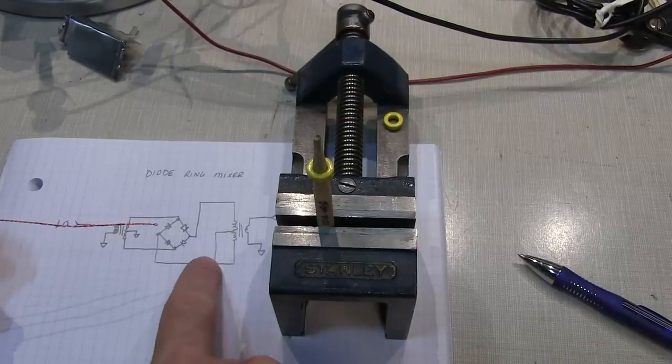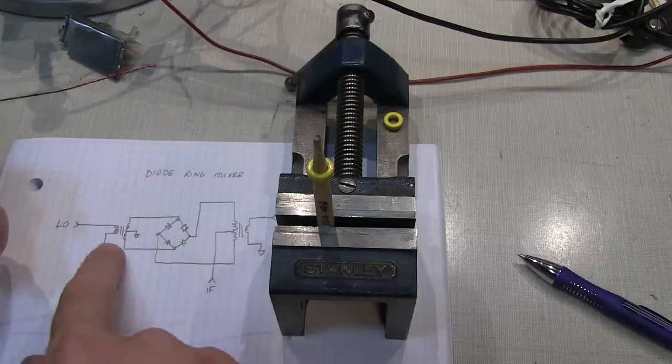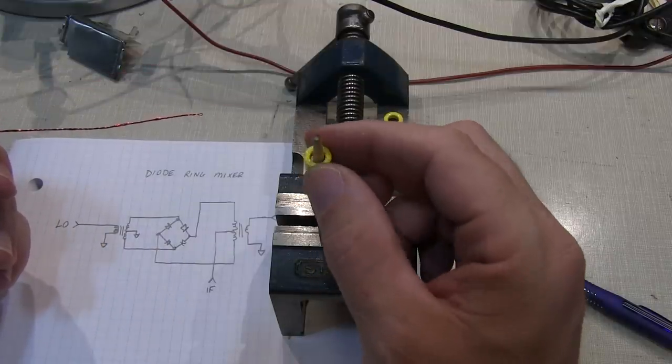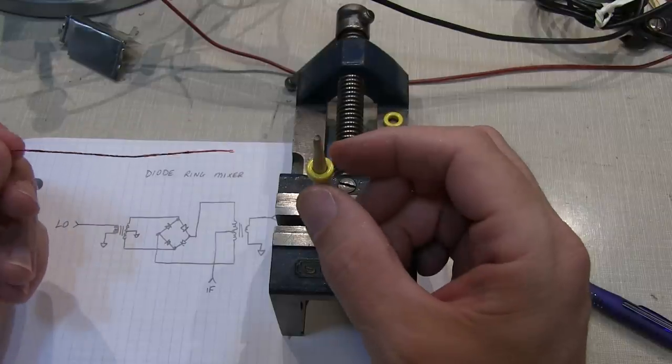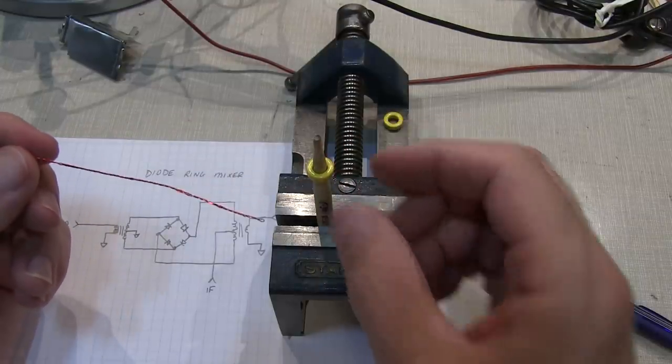One of the circuits we're playing around with here next is a diode ring mixer, and that requires winding two tri-filer wound transformers. I'm going to do them on this toroid here. So just a short video of how to wind a tri-filer toroid.